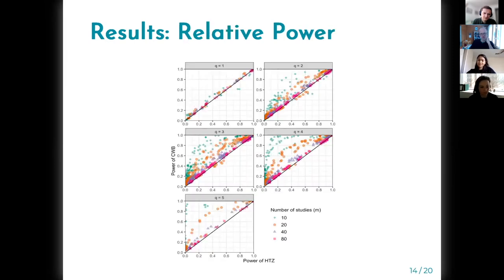And this is the result for power. We have the power of HTZ on the y-axis and the different colors indicate the number of studies used in the simulation, and the different facets are the number of contrasts.